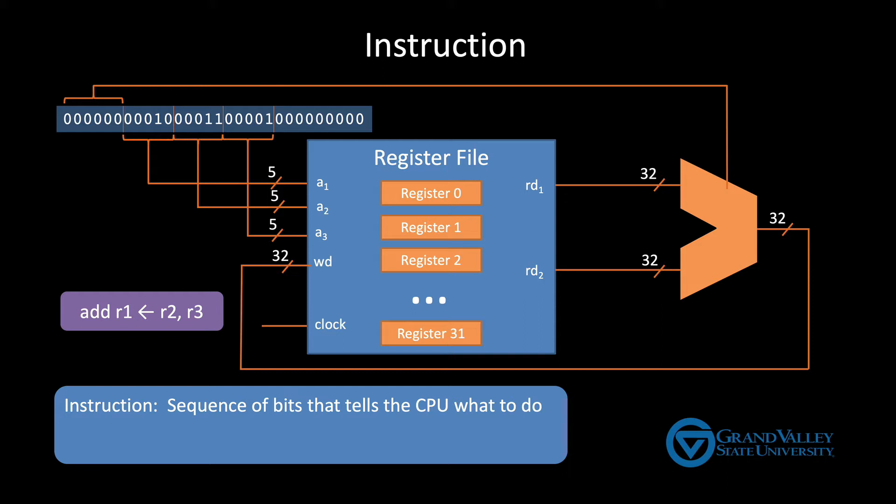Groups of bits get pulled out of the instruction and sent to the different components of the CPU. Using this instruction as an example which adds R2 and R3 and then puts the result back in R1, the first group of bits tells the ALU what operation to perform. The second and third groups of bits specify the registers to be read and the fourth group of bits specifies which register to be written. For now the remaining bits are unused although that'll change before the end of the video.